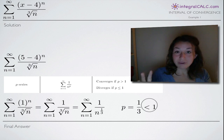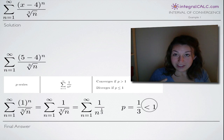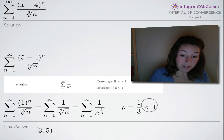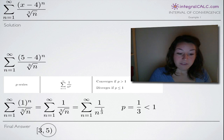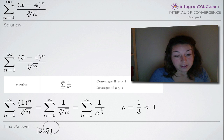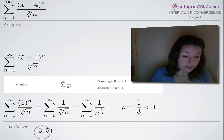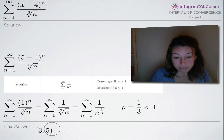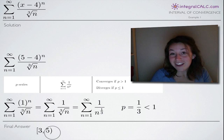So everything between 3 and 5 converges, and the series also converges at the point 3, so we use a closed bracket there. Since the series diverges at 5, we use an open parenthesis there. Our final answer for the interval of convergence is [3, 5). I hope that was helpful — see you in the next video!